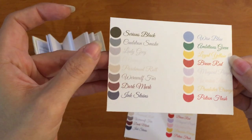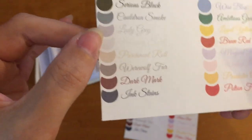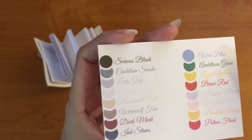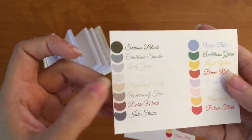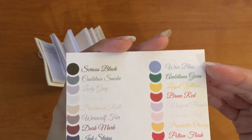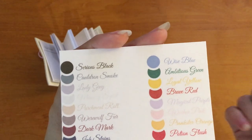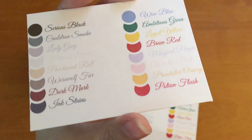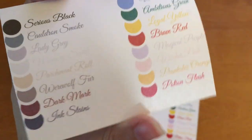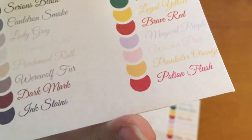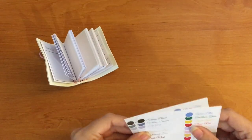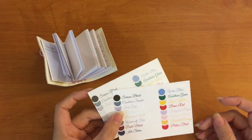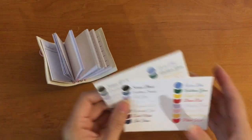So Sirius Black, Cauldron Smoke, Lady Grey, Memory Swirl. It's a bit difficult to read. But on insert is very nice if you don't want line to show up too much in your planner, but still want some lines like guidelines. Then you've got Parchment Roll, Werewolf Fur, Dark Mark, Ink Stains, Wise Blue, Ambitious Green, Loyal Yellow, Brave Red, Magical Purple, Watcher Pink, Prankster Orange, and Potion Flash. It doesn't really show well on camera, but the Potion Flash is actually a very bright hot pink in reference to the Weasley's Wizarding Whizzies love potions. So yeah. Yes, all of my names or a lot of my names have magical references or Harry Potter references because I'm a potter head and yeah, what do you expect from a potter head? So the colors of the prints.